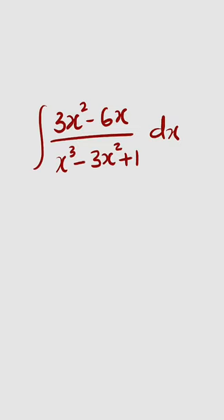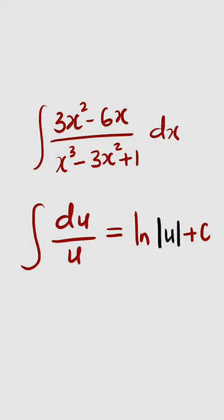How can we integrate a function that looks like this? If you differentiate the denominator, it will be exactly as the numerator. So whenever you have a situation like this, where the derivative of the bottom is exactly as the top, it is always equal to the natural log of the absolute value of the denominator plus the constant of integration.